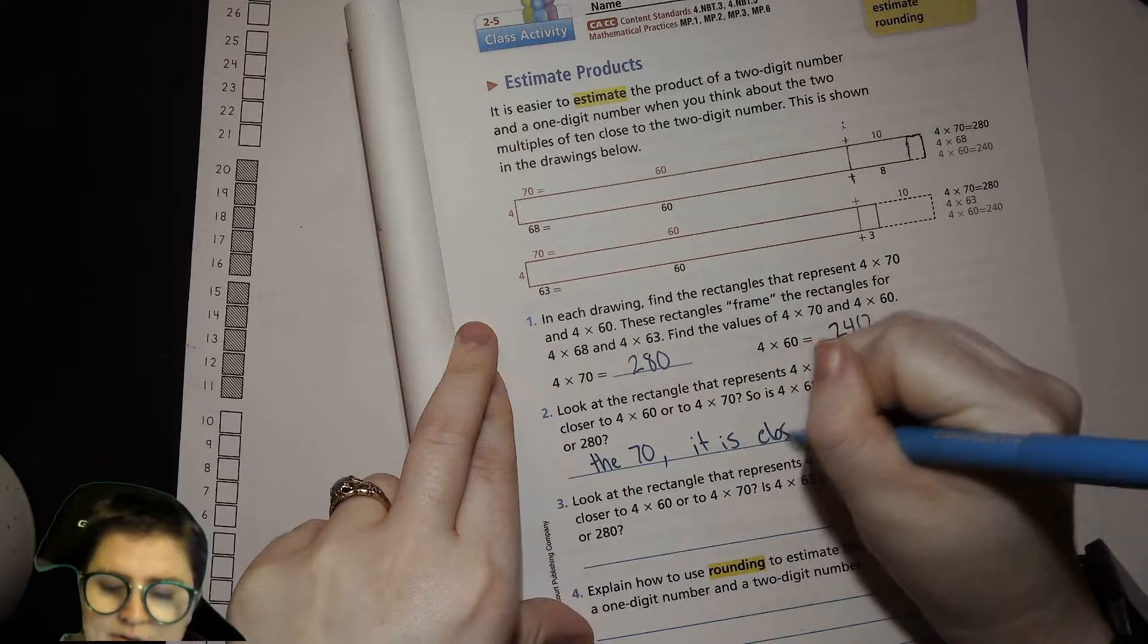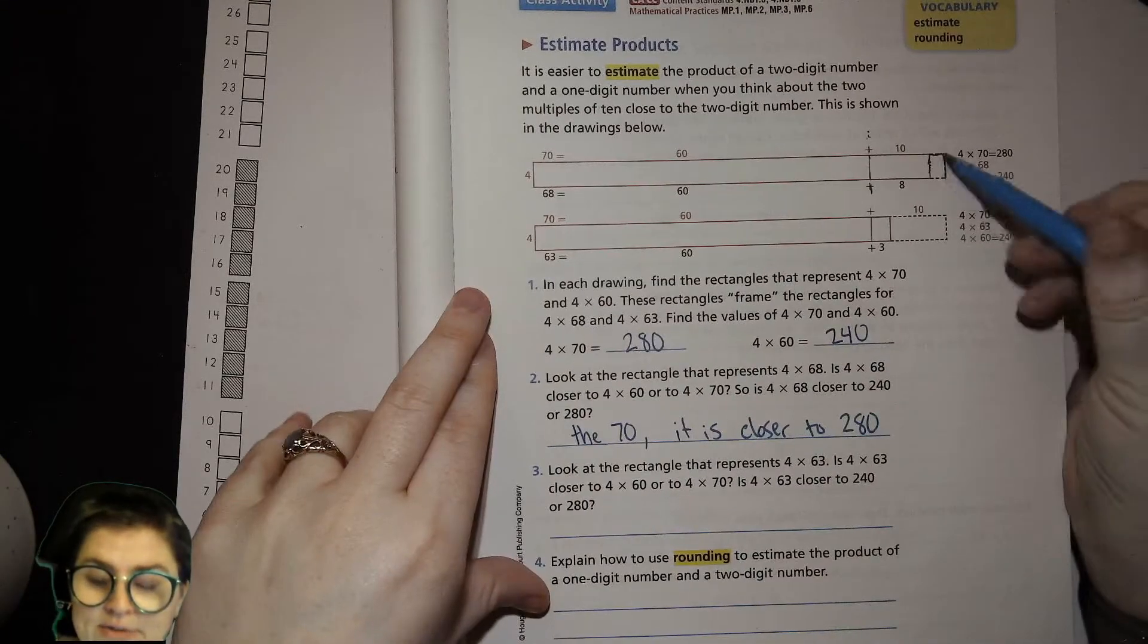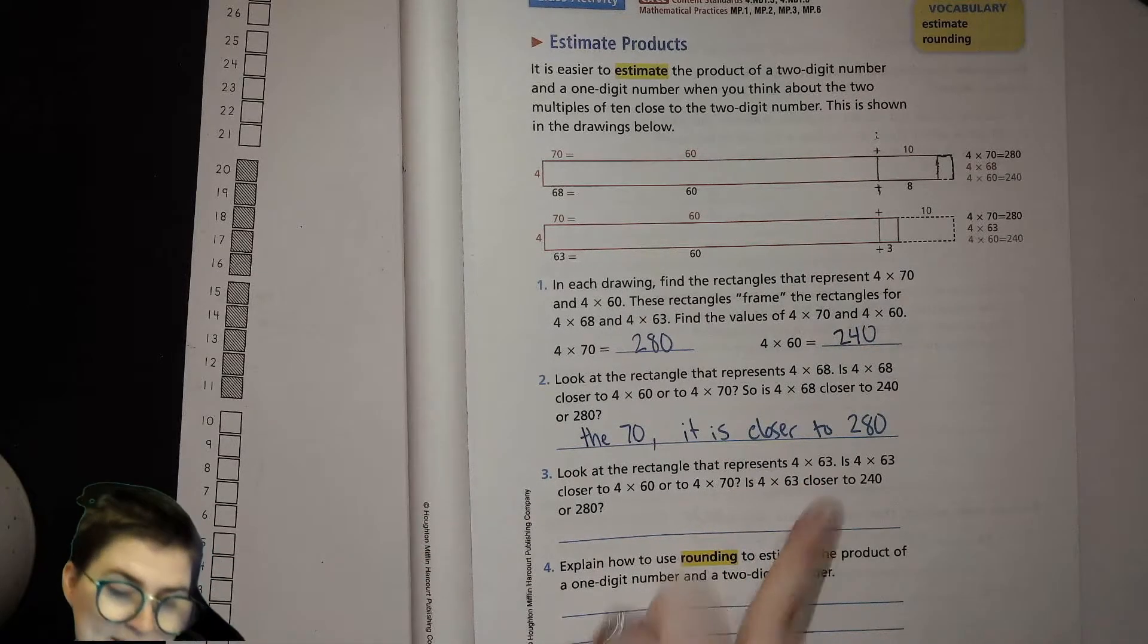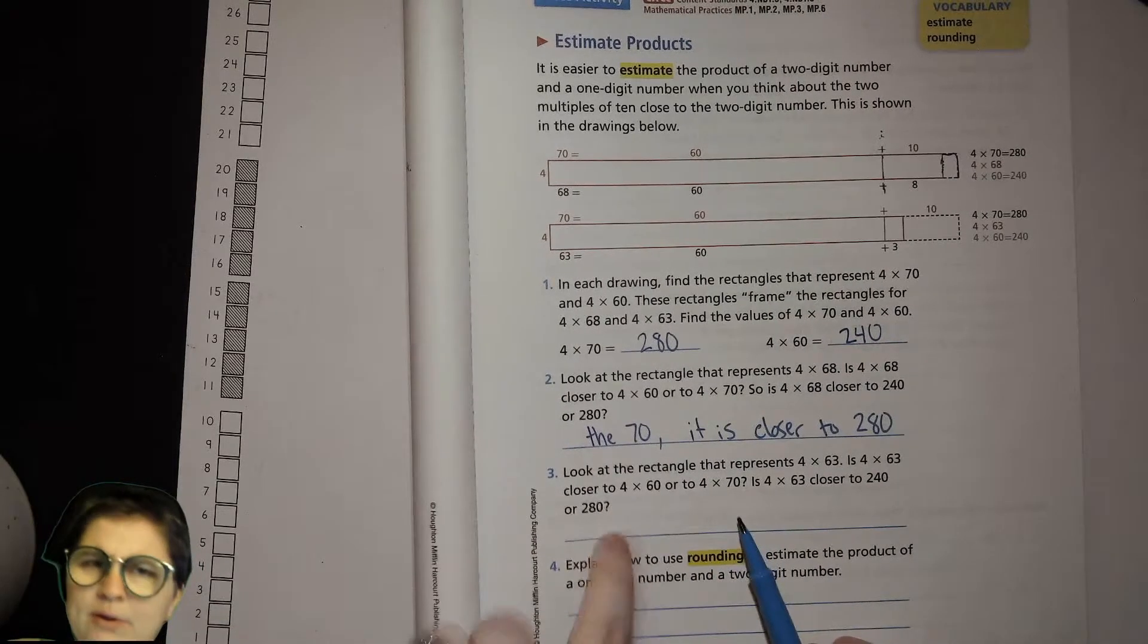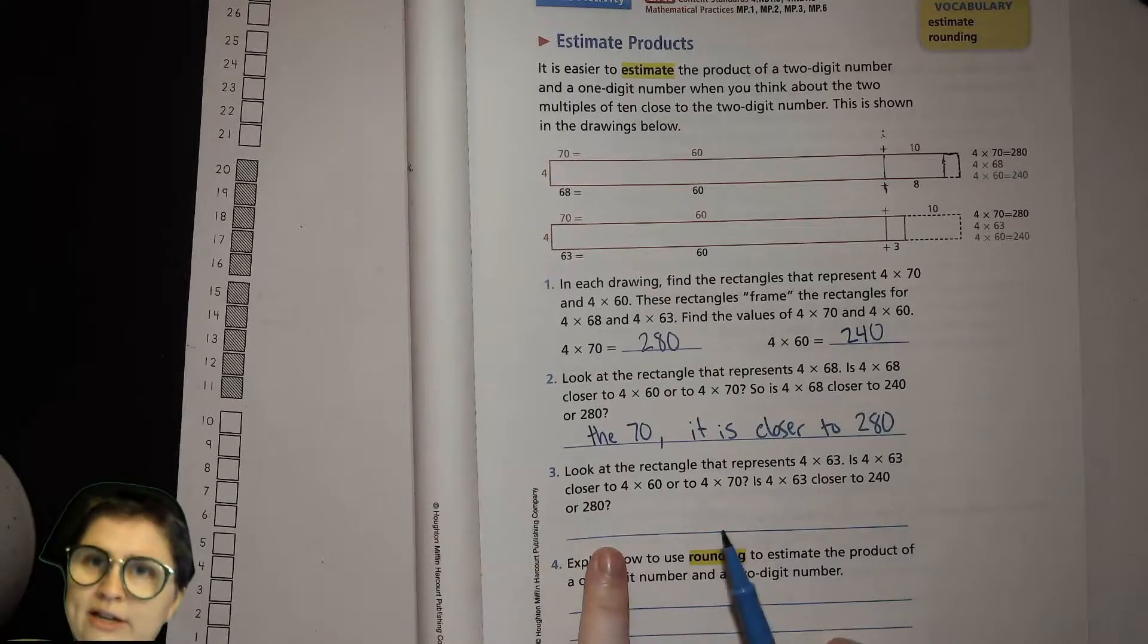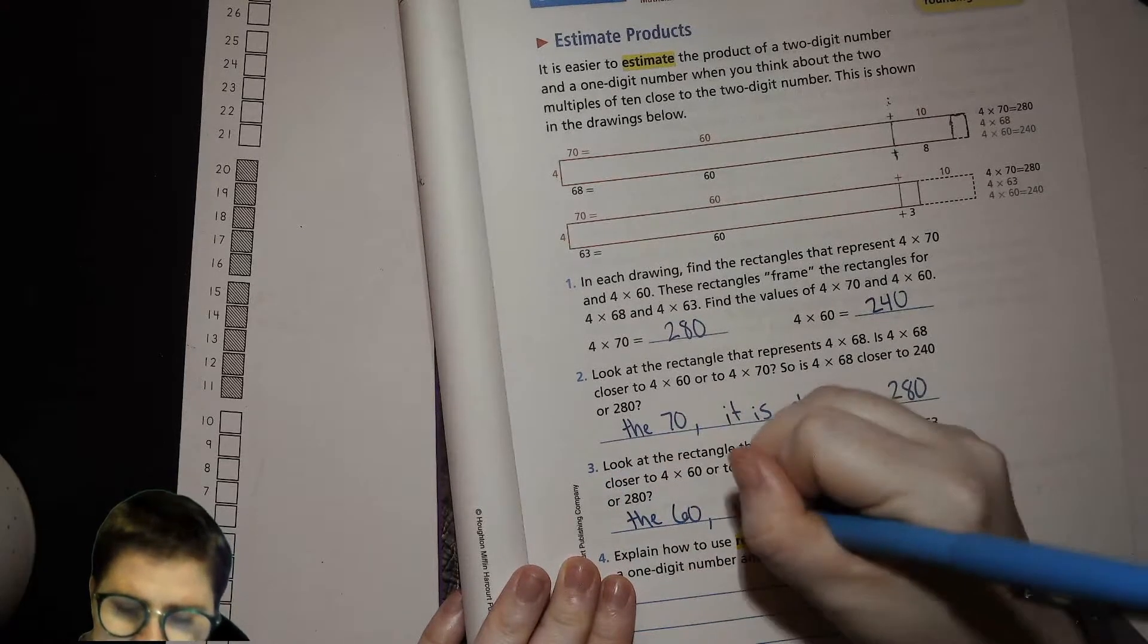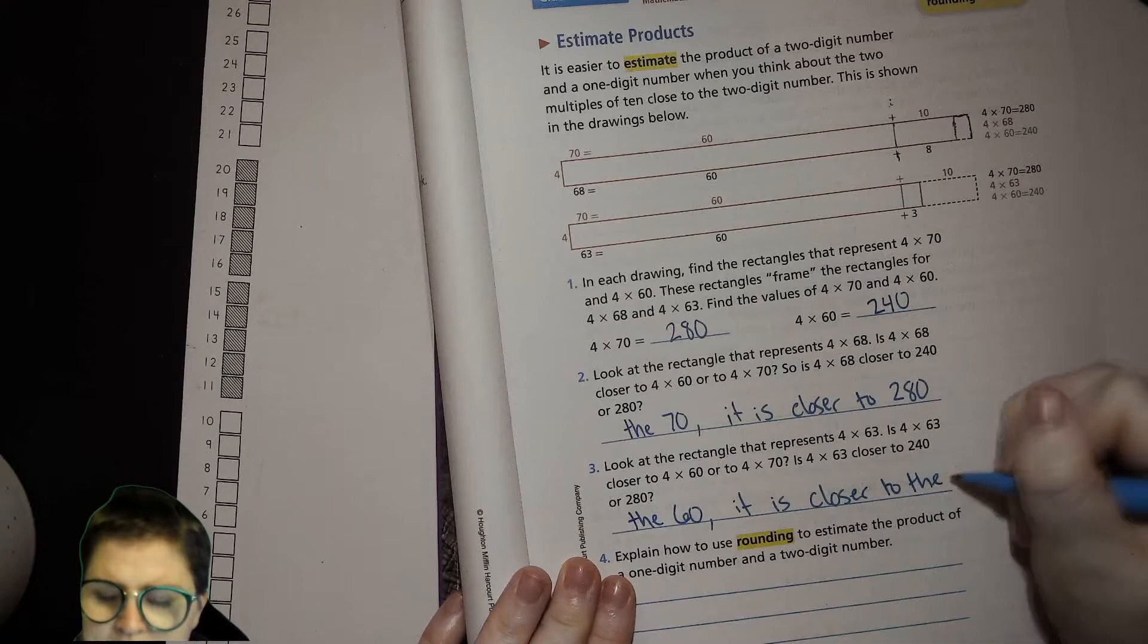It's closer to 280, right? Because it's closer to, you know, 4 times 70. Okay, now look at the rectangle that represents the 4 times 63. Is 4 times 63 closer to the 4 times 60 or the 4 times 70? I want you to write what you think right here and then answer is 4 times 60 closer to 240 or 280, and write that right there. Okay, I'm gonna go now. Ready? The 60. It is closer to the 240.